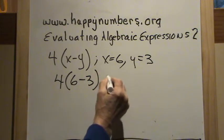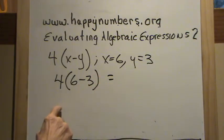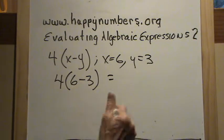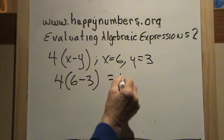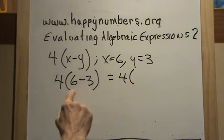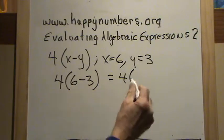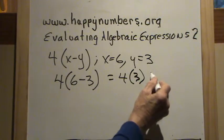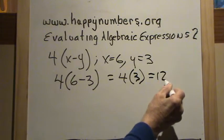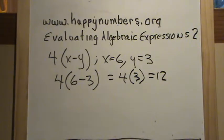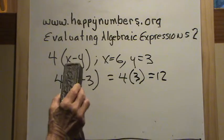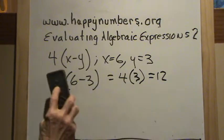According to our order of operations, we have to do parentheses first. So we have 4 times — 6 minus 3 is 3 — and then 4 times 3 is 12. The skill set is still easy: we just substitute our numbers for the variables and then solve.